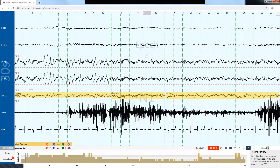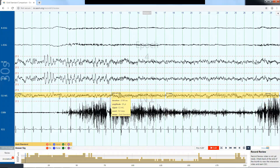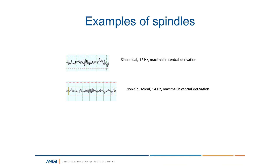In epoch 4 we have N2 sleep, then some alpha activity which is basically an arousal, then the frequency decreases back to N1, and then another arousal at the end — so two arousals in this epoch and an overall stage of N1. Here are some examples of spindles: a sinusoidal approximately 12 hertz frequency that starts low amplitude, increases, then tapers off, and a non-sinusoidal 14 hertz spindle — all maximal in the central derivation.